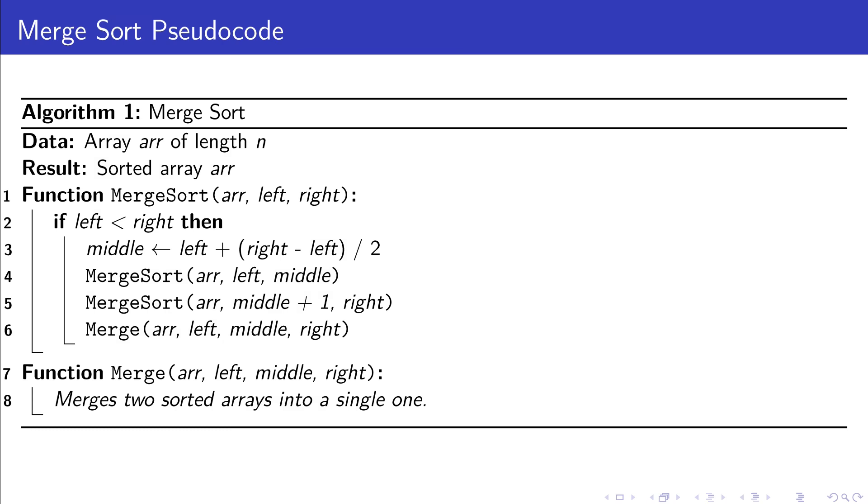If this condition is true, we calculate the middle point of the array and recursively call Merge Sort on both the left and right halves. After both halves are sorted, the Merge function combines them into a single array, merging the two sorted subarrays using the left, middle, and right indices.